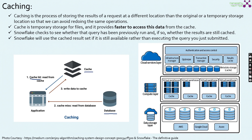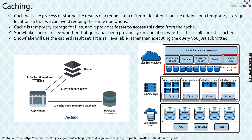This is the Snowflake architecture diagram which we already saw. In this diagram, there are three different caches available. There are two caches within the cloud services layer — the result cache and the metadata cache — and there is one cache within the compute layer, which is the warehouse cache. In this video we are going to discuss all three of these caches.